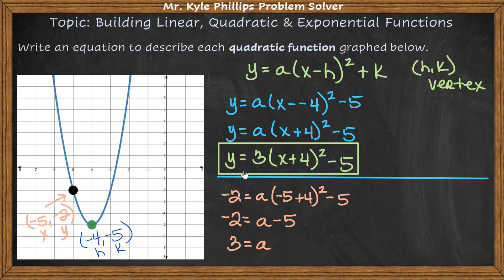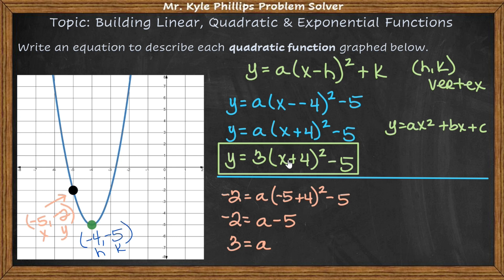If your teacher wants it in standard form — y equals ax squared plus bx plus c — all you have to do is multiply it out: three times x plus four times x plus four, minus five. You would FOIL and combine like terms. It would just be a few more steps, but vertex form is really nice because it's very easy to generate the graph from it.